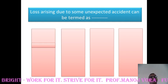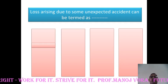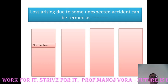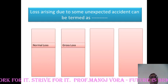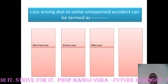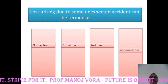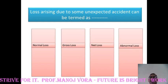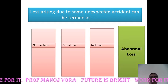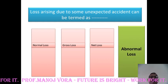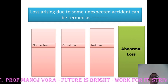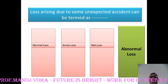The first question: loss arising due to some unexpected accident can be termed as — your first option is normal loss, second option is gross loss, third option is net loss, and the fourth option is abnormal loss. You have got it right — it is abnormal loss.